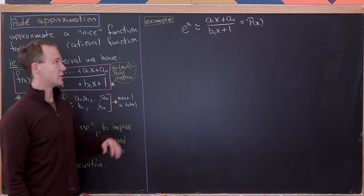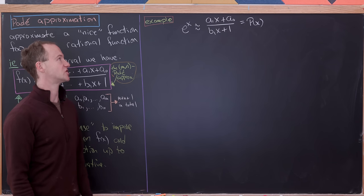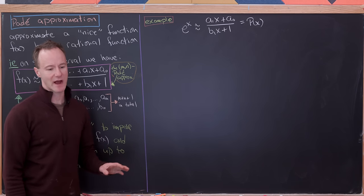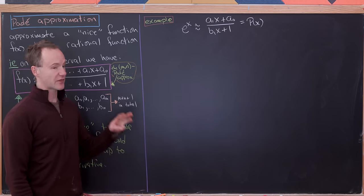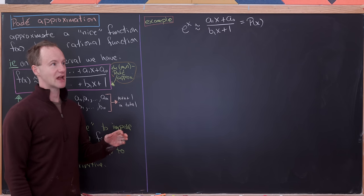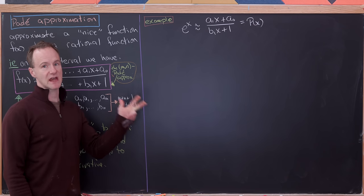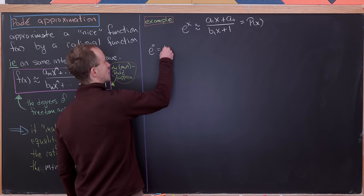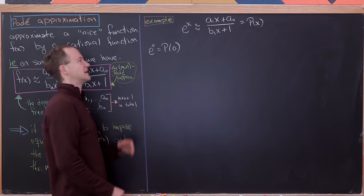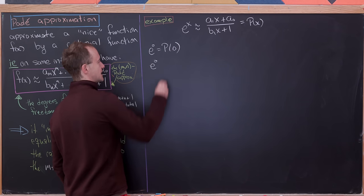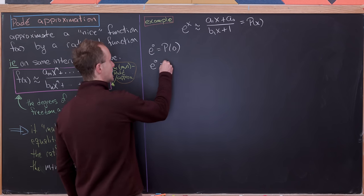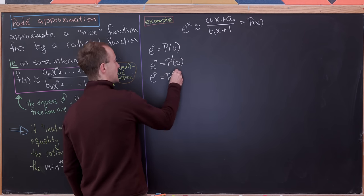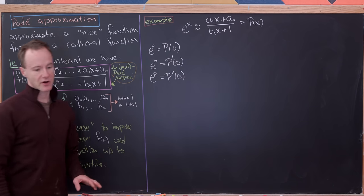For our first example, we'll look for an approximation of e^x as a quotient of linear polynomials, call it p(x). We have three degrees of freedom, so we impose equality of the functions, their first derivatives, and second derivatives at zero: e^0 = p(0), e^0 = p'(0), and e^0 = p''(0). Those are our three equations.